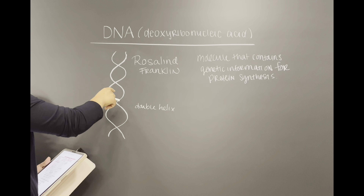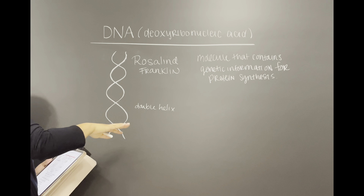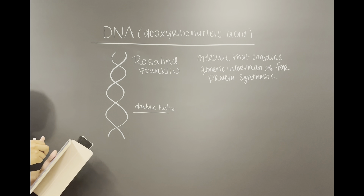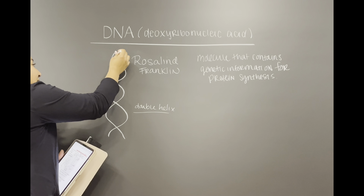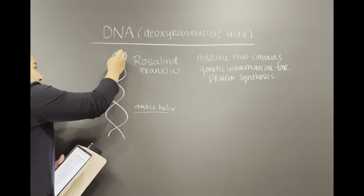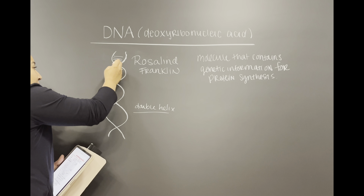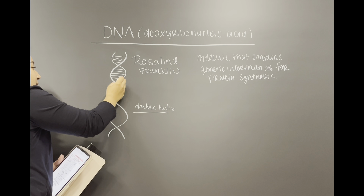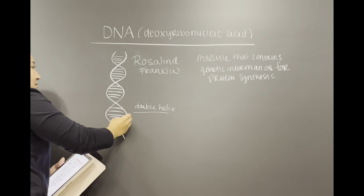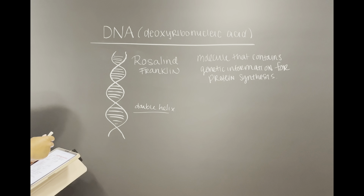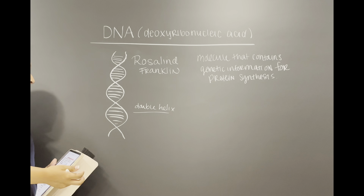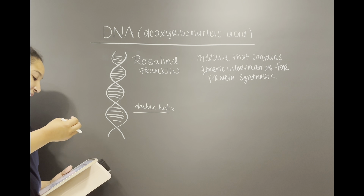Let's talk about the structure of DNA. This structure is called a double helix because it looks kind of like a ladder, but it's twisted in a way. It's called a double helix. And within these bands, we see these lines, and we're going to talk about what these lines are in just a second.